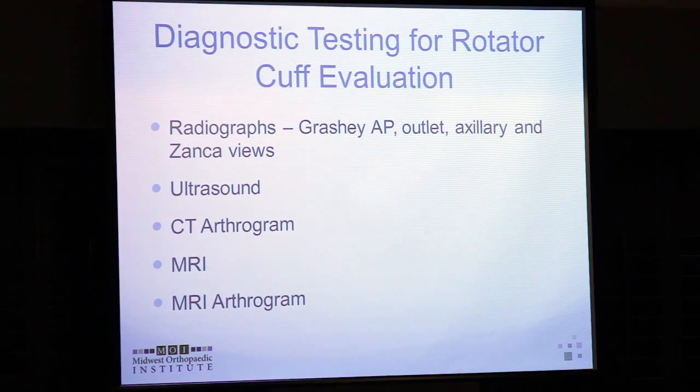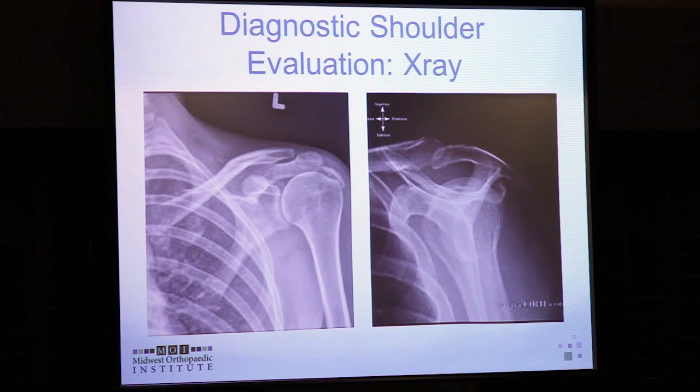Once the physical exam is done, we look at radiography and advanced imaging. X-ray view consistency can be challenging due to variability in how techs shoot their films. A patient presenting with shoulder pain and rotator cuff weakness might have calcific disease on x-ray — an exacerbated calcific tendonitis that pre-existed an injury but is now an active cause of disability. An outlet view can show acromion morphology where a curved acromion narrows the supraspinatus outlet, predisposing to rotator cuff disease.